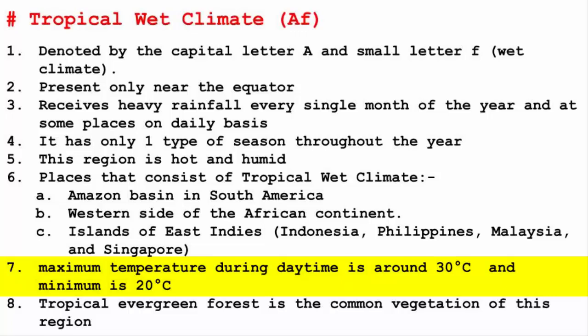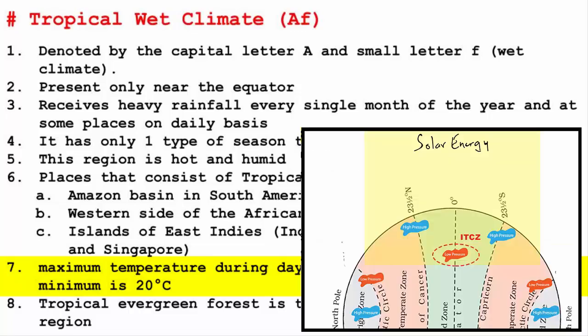In these places, the maximum temperature during daytime is around 30 degrees Celsius, while the minimum temperature is around 20 degrees Celsius. It's not very hot during the daytime because 30 degrees Celsius is manageable, and at night it is not very cool either — 20 degrees Celsius at night is warm and good enough. This temperature is the same throughout the year because tropical wet climate is found along the equator, and the equator receives direct sunlight all throughout the year.